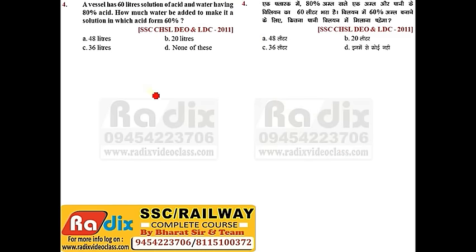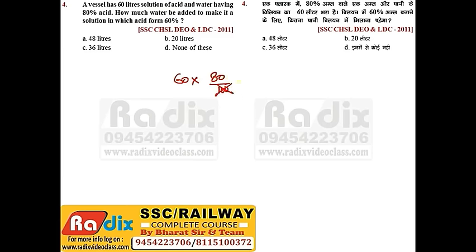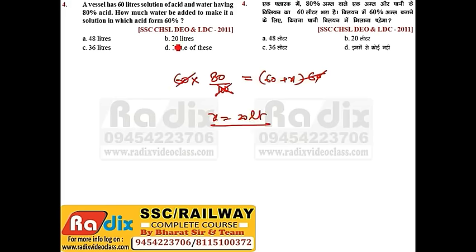Next question. A vessel has 60 liters of acid-water solution with 80% acid. How much water must be added to reduce the acid percentage? We are adding water, so acid will remain the same. Initial: 60 liters at 80% acid. We add x liters of water so the solution becomes 60% acid. Solving: 60 × 80% = (60 + x) × 60%, which gives x = 20 liters. Answer is option B.